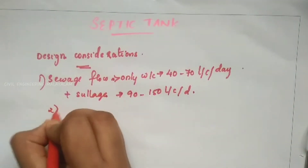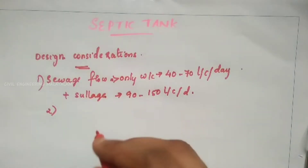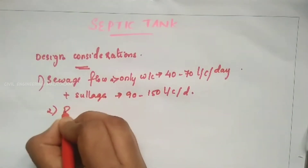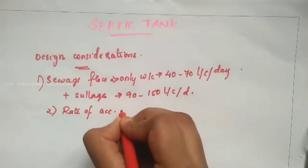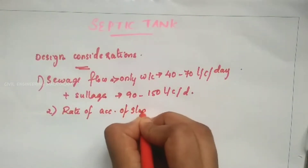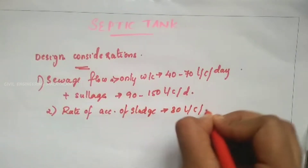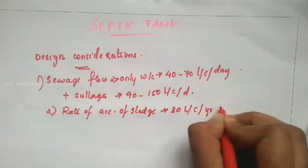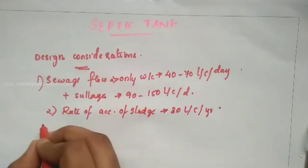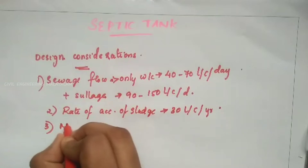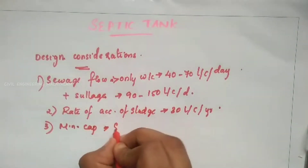The second consideration is the rate of accumulation of sludge, which is 30 liters per capita per year. The third is the minimum capacity of the septic tank, which is about 8 to 10 percent.